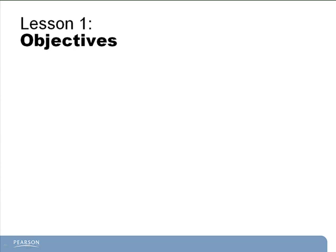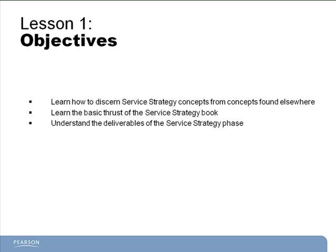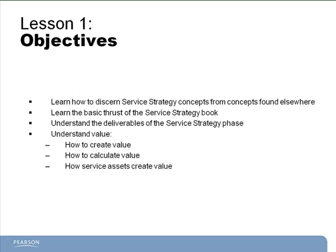Lesson 1 has four main objectives. First, we need to learn how to discern between the concepts found in the Service Strategy book from concepts found in other phases of the service life cycle. Next, we'll understand the basic gist of the Service Strategy book. We'll also learn the deliverables, or outputs, of the Service Strategy phase for handoff to our next phase, which is Service Design. And we're also going to understand what value is, how to create it, how to calculate it, and how service assets contribute to its creation.